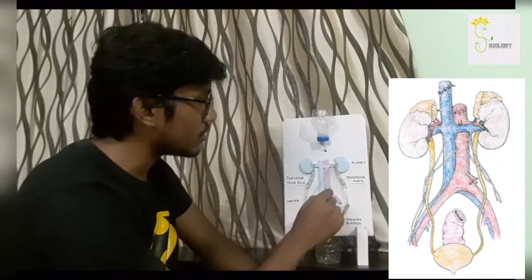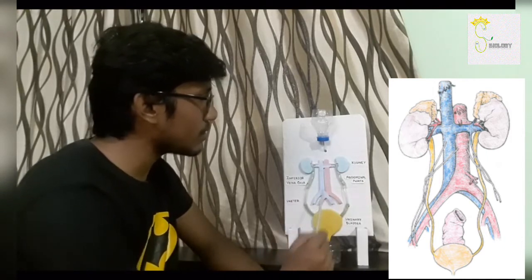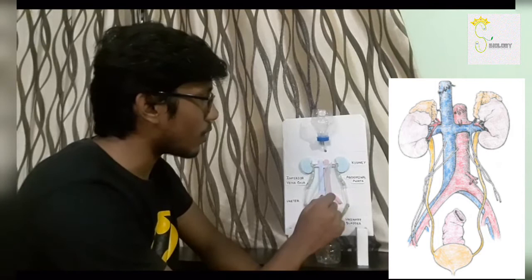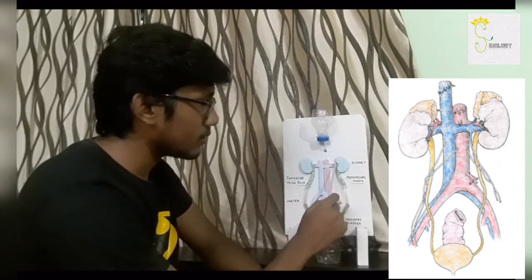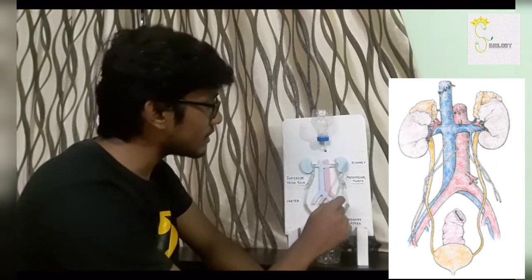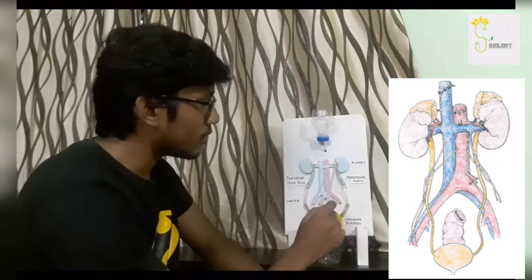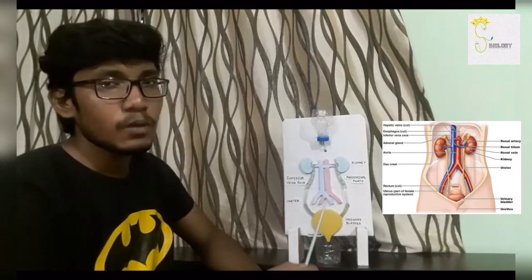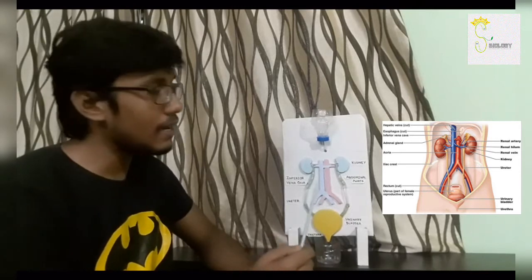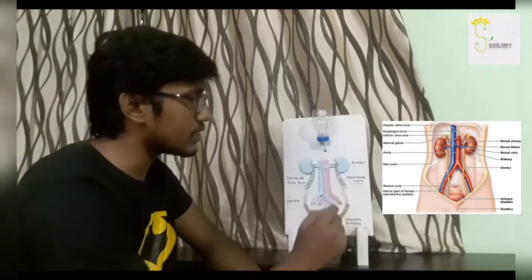The pink portion, these two portions are renal arteries. These are the branches of aorta bringing waste-filled blood into the kidney for filtering in the nephrons. Each kidney has approximately 1 million or 10 lakh nephrons present.